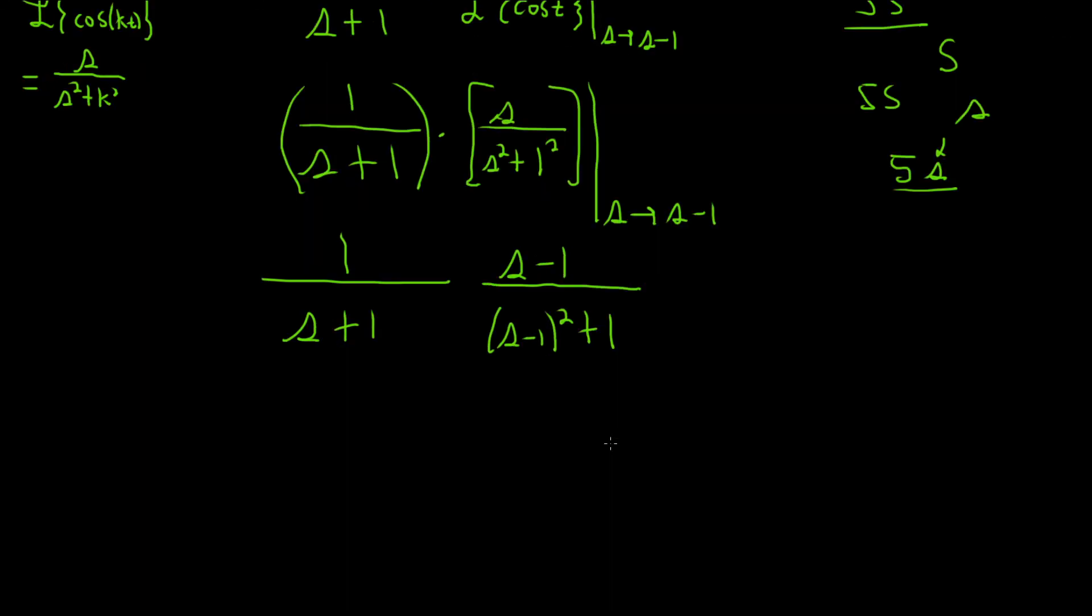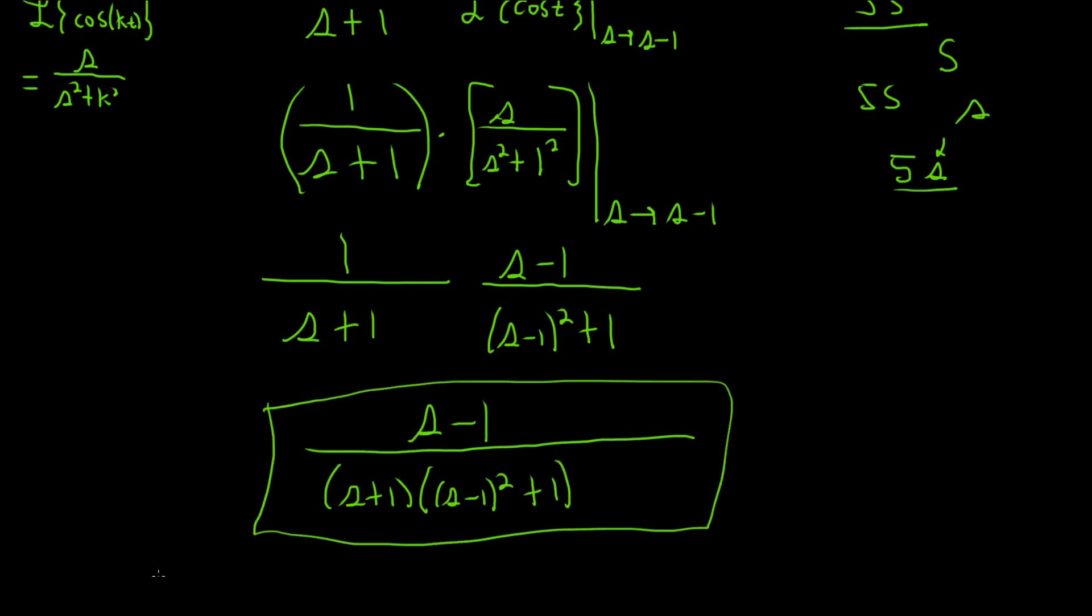Let's combine these into one. So it'll be s minus 1 up top, and on the bottom we'll have s plus 1, and then s minus 1 squared plus 1. And that'll be the final answer. I hope this video has been helpful.